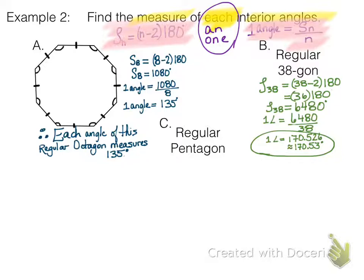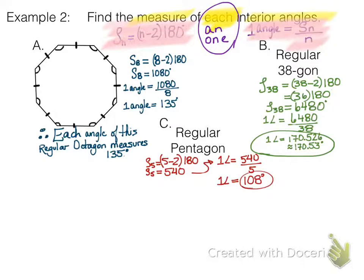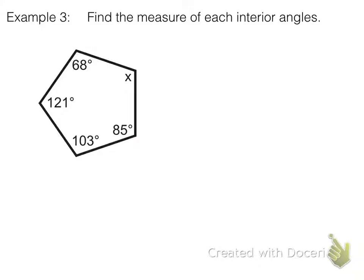Try the last one on your own — pause it. All right, thanks for coming back. So S of 5: five minus two times 180 gives us 540. We take 540 and spread it to all five angles, getting 108 degrees for each. But you might say, Miss Leisure, what if all the angles aren't the same? What if it's not a regular shape? Let's look at this example — make sure you're copying all your examples down.